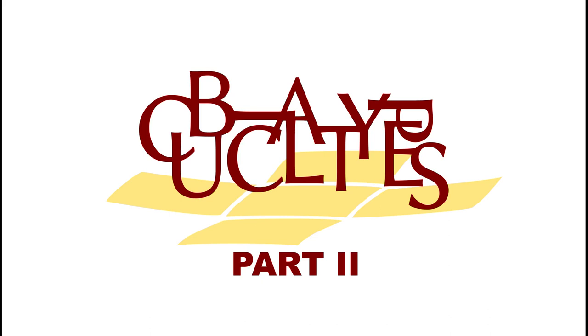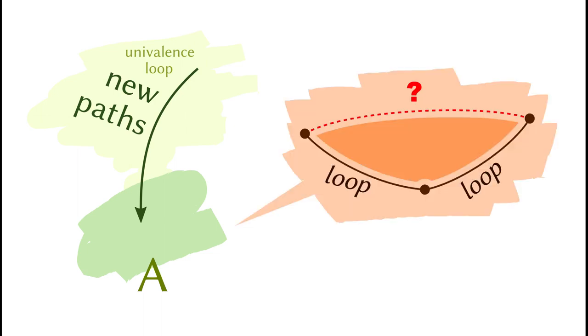This is the second part of the introduction to cubical type theory. Last time, we mentioned that we are going to add new paths into the types, but then we ran into the problem that we could not even talk about the concatenation of two paths.